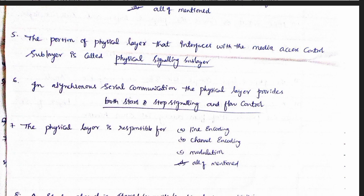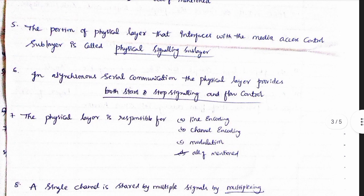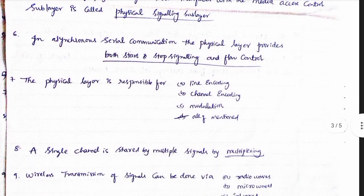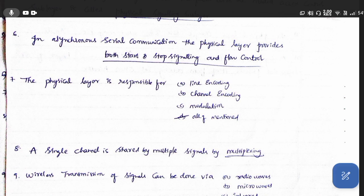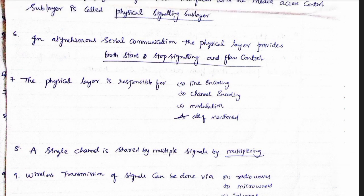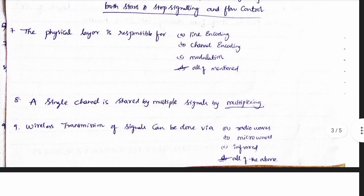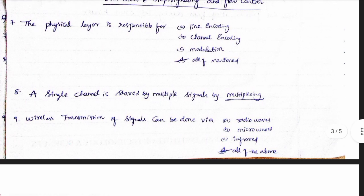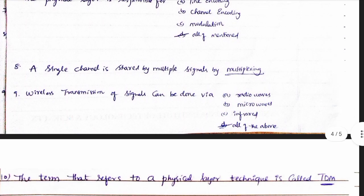In asynchronous serial communication, the physical layer provides both start and stop signaling and flow control. The physical layer is responsible for line encoding, channel encoding, and modulation. A single channel is shared by multiple signals by multiplexing. Wireless transmission of signals can be done via radio waves, microwave, and infrared waves.